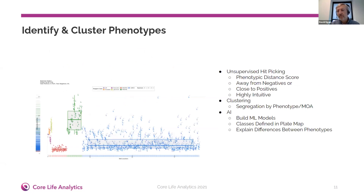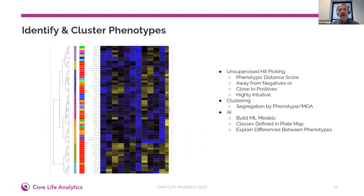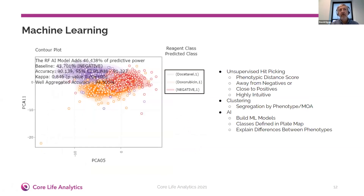They can calculate distance scores to identify outliers and phenotypes, calculating distances from the negative controls or from other defined controls. You can see various different classes here with different colors — these are classes defined in the plate maps or through the analysis in the interactive data visualizations. Once they've identified interesting phenotypes, they can carry out clustering. If they have cell level data, we allow them to build machine learning models using classes defined in their plate maps.